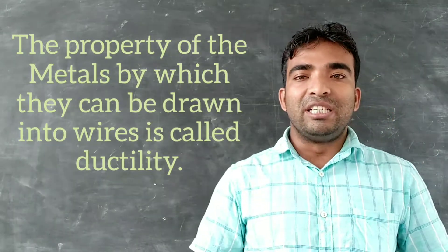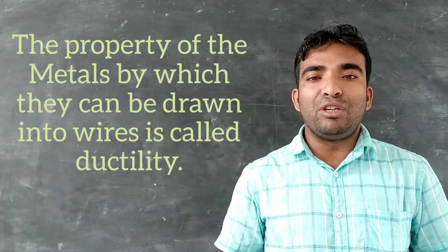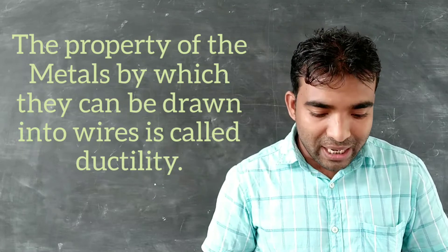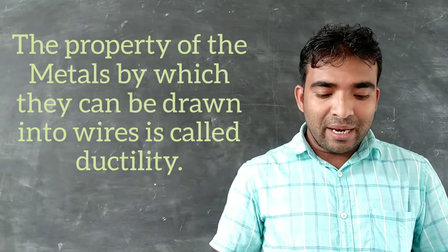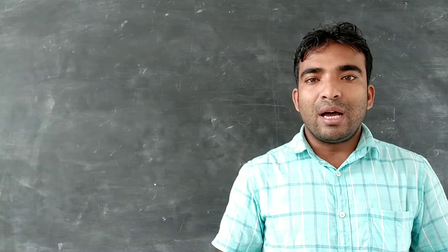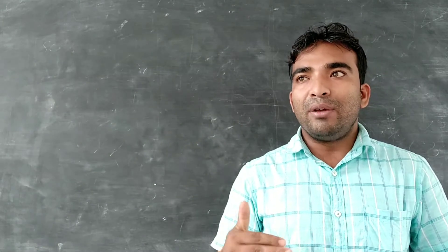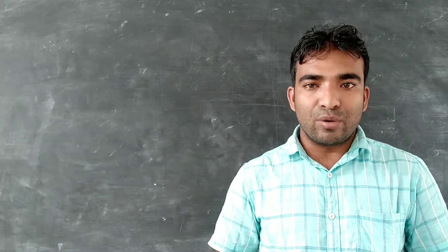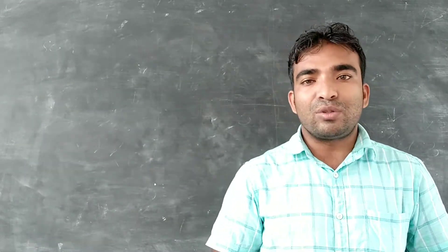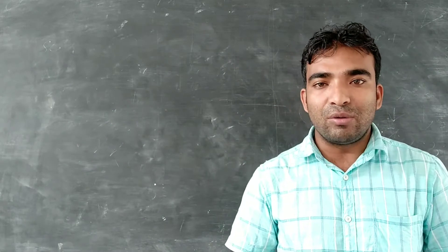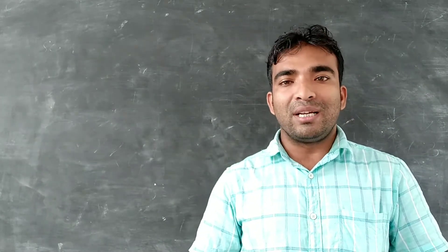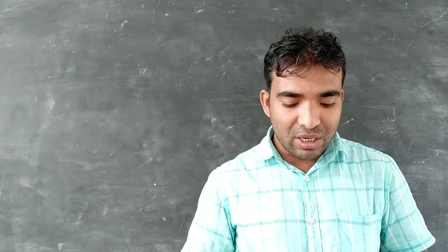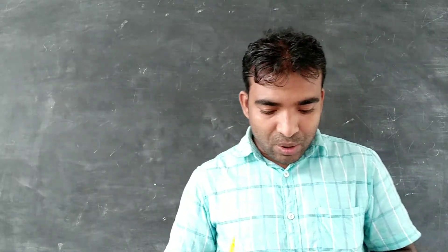The third property is ductility — the property of a material by which it can be drawn into a wire. Next is sonorous: the property of metals by which they produce a ringing sound. Metals are sonorous because they produce a ringing sound, whereas non-metals do not produce a ringing sound and are therefore not sonorous.